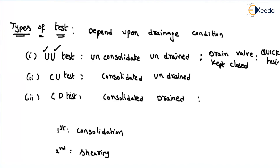For the consolidated drained test — the CD test — even in consolidation there is expulsion of pore water pressure, and if it is drained, again expulsion of water occurs. So contrary to the UU test, the drain valve is always kept open. Because the drain valve is always kept open, this will take a very long time. So this is the slowest test.